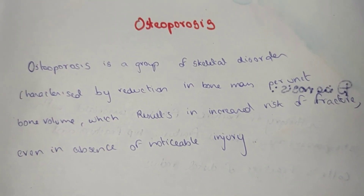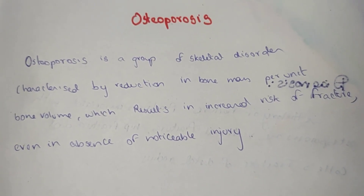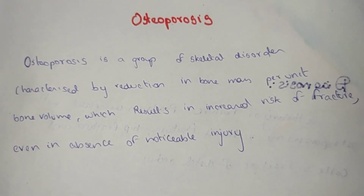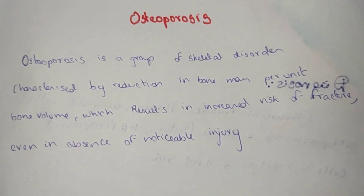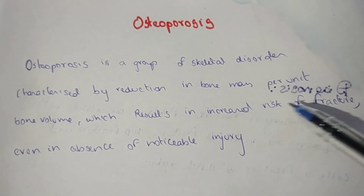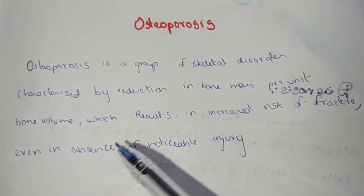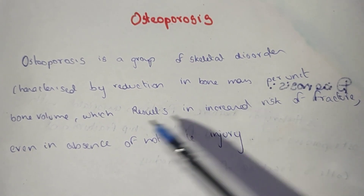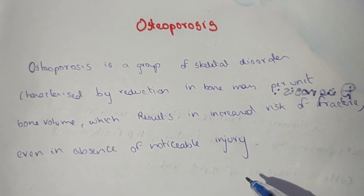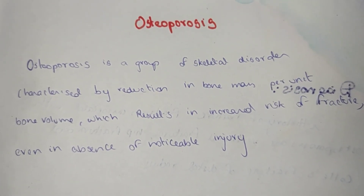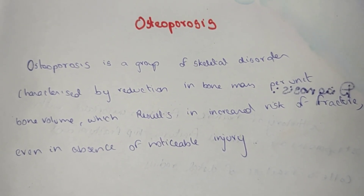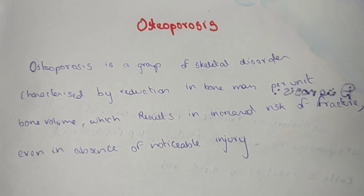Osteoporosis is a group of skeletal disorders — it is not a single disorder. It is characterized by reduction of bone mass per unit and bone volume, which results in increased risk of fracture even in the absence of noticeable injury.